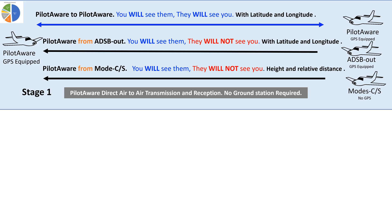Thirdly, PilotAware will detect all Mode C and Mode S equipped aircraft. The information received will not include GPS coordinates as none are transmitted, but it will provide height and a relative distance based on the rate of change of the signal power received. This will then be shown as a bearingless target on the flight bag or screen. The Mode S and Mode C target in this instance will not see you. Without the use of any PilotAware ground infrastructure, we can already detect 60% of the aircraft transmitting an electronic conspicuity signal in the UK.